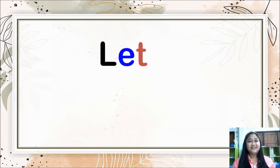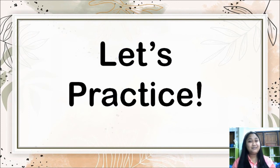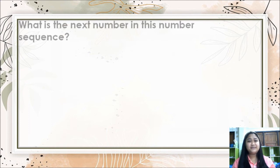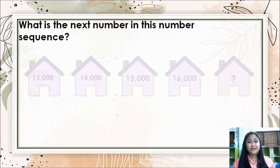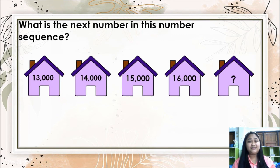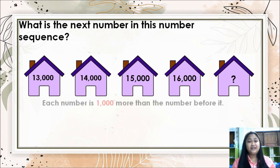All right, now let's practice — are you ready? Let's begin. What is the next number in this number sequence? We have 13,000 — 14,000 — 15,000 — 16,000. What's the next number? Each number is 1,000 more than the number before it.